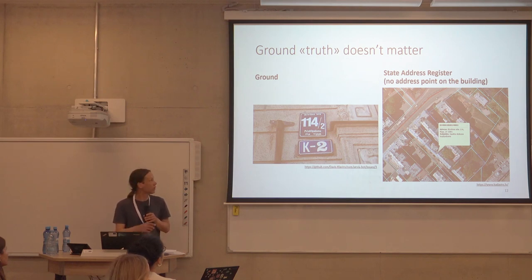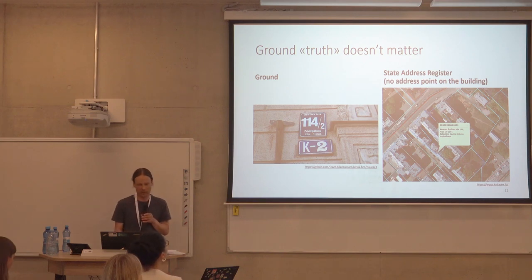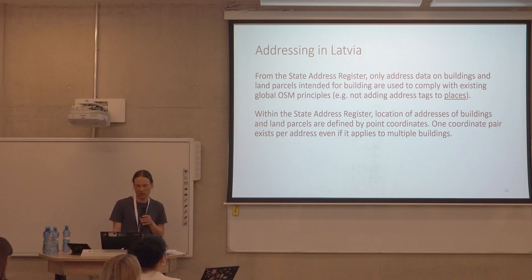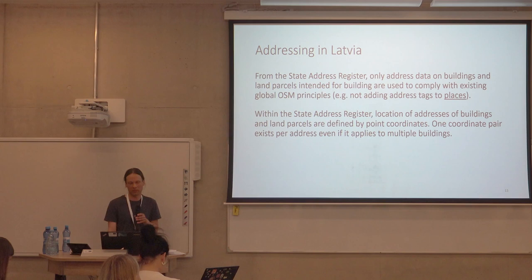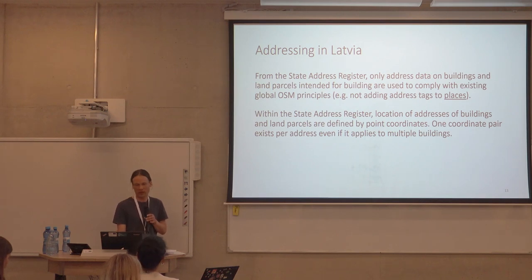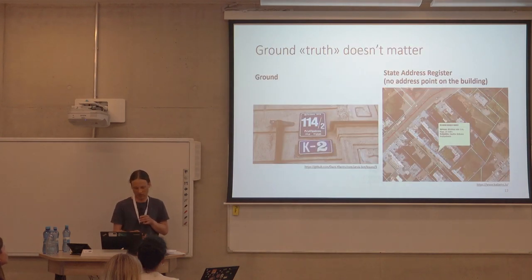There is an example picture. This building doesn't even have an address point on it but it has the same address result. From the state address register, only address data for buildings and land parcels intended for building are used, to comply with existing OpenStreetMap principles — for example, not adding addresses to places, since the address register also has entries for municipalities, villages, streets, etc. Within the address register, the location of addresses is defined by point coordinates, and one coordinate pair exists per address even if it applies to multiple buildings.